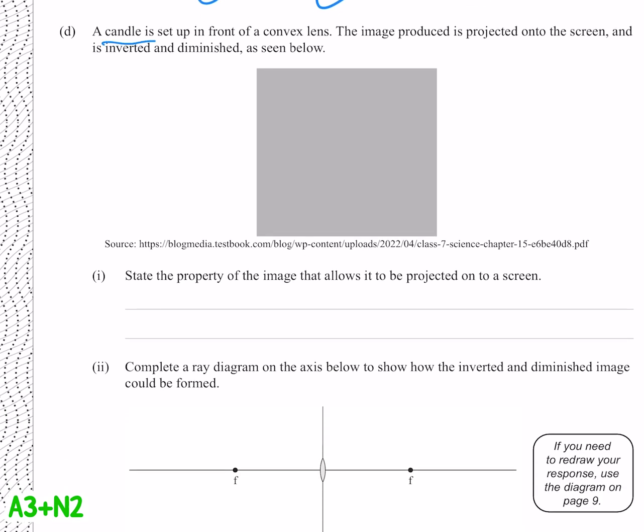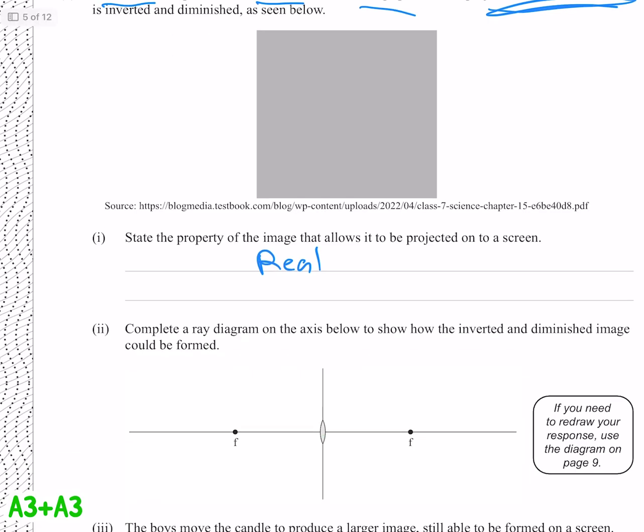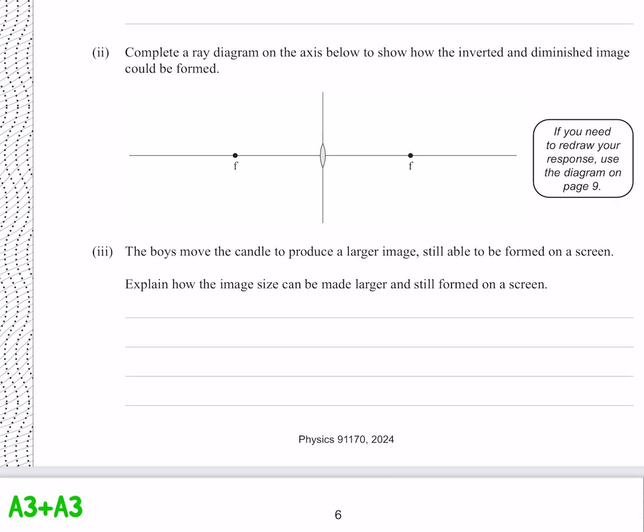We have a candle, a convex lens and an image projected onto a screen. State the property of the image that allows it to be projected onto a screen. Well to do that it must be real. I think we've done enough ray diagrams for one day, and we'll skip this too.